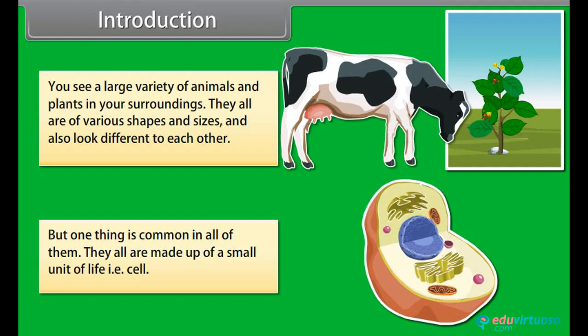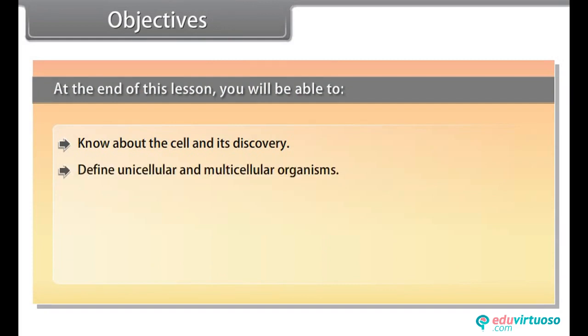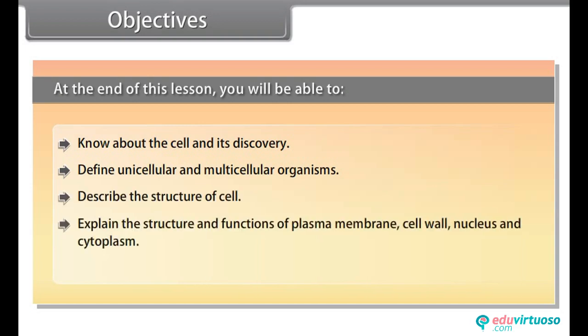Objectives: At the end of this lesson you'll be able to know about the cell and its discovery, define unicellular and multicellular organisms, describe the structure of a cell, and explain the structure and functions of plasma membrane, cell wall, nucleus, and cytoplasm.